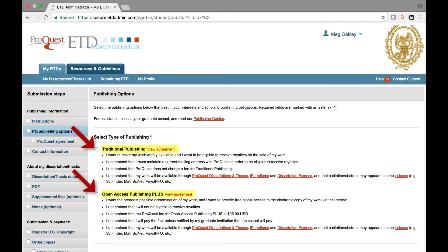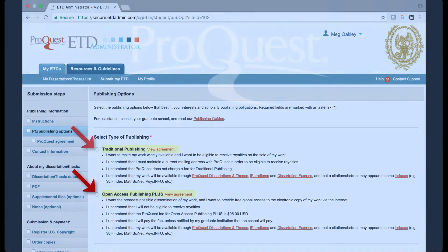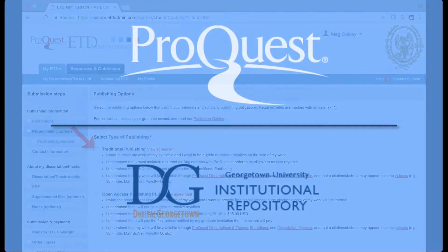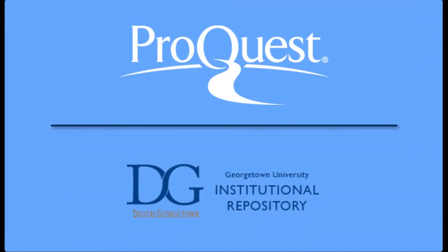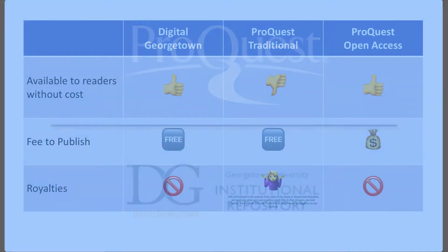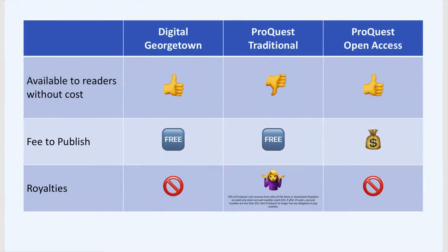No matter which ProQuest option you choose, your work will also be submitted and made available in Digital Georgetown, the university's open access repository maintained by the Georgetown University Library. There are three factors to consider when you decide between Traditional and Open Access Publishing: who can access your work, cost of publication, and potential royalties.